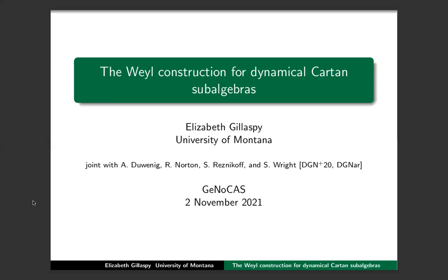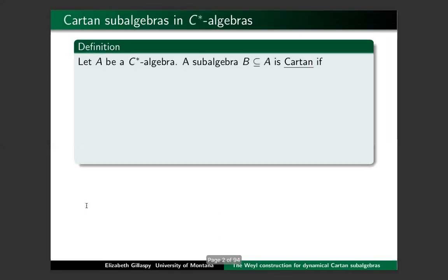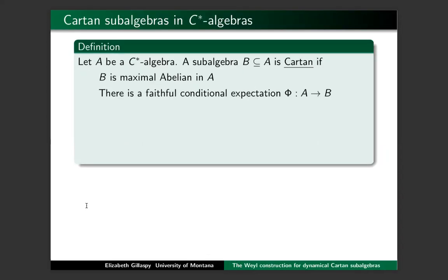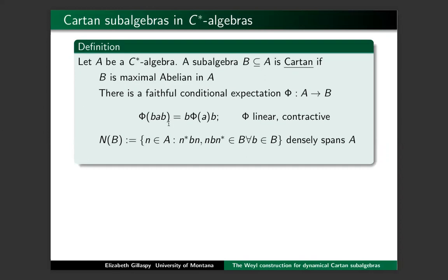Let me tell you about our work on the Weyl construction for dynamical Cartan subalgebras. Let me start by telling you what a Cartan subalgebra is in a C*-algebra. If you've got a C*-algebra A and a subalgebra B inside of it, we say that B is Cartan if it satisfies four properties. First, B has to be a maximal abelian subalgebra. Second, there has to be a faithful conditional expectation φ from A onto B. φ is B-linear in that any B and B' in the subalgebra B will pull out of the conditional expectation φ, and φ has to be linear and contractive.